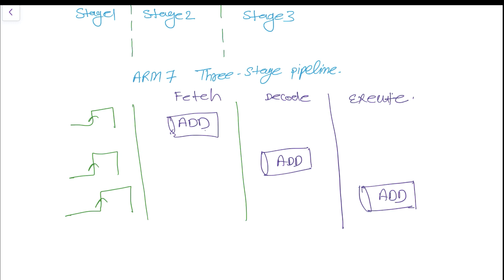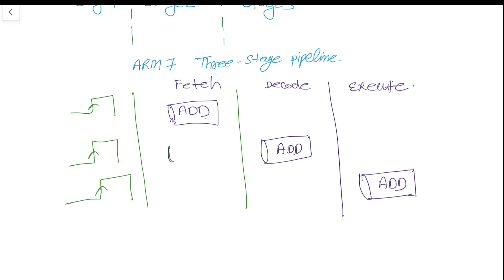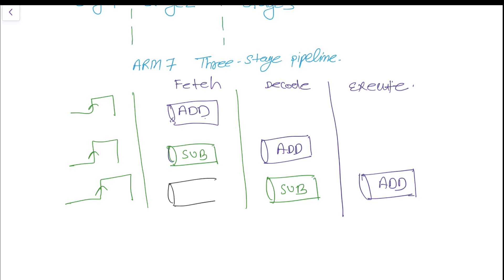When ADD moves into the decode stage, the processor simultaneously fetches the next instruction — SUB (subtract) — at the fetch stage. Then when SUB moves into the decode stage, the fetch stage becomes free and the pipeline fetches the next instruction, which is CMP (compare).